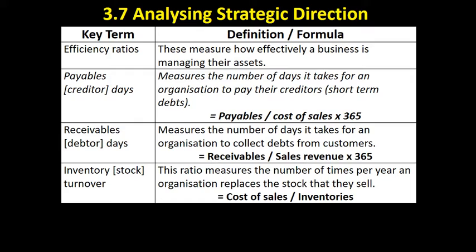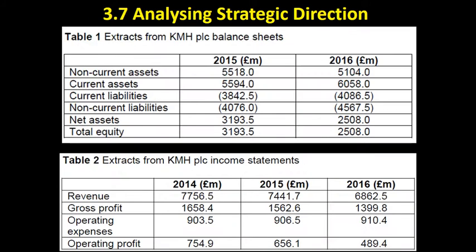When a business buys an item on credit from a supplier, how long does it take to pay them off? It's calculated by payables divided by cost of sales, times 365 for the days in the year. Payables is money owed to suppliers; cost of sales is obviously the variable cost of production. Multiply that by 365 and it gives us an indication of how long it's taking us to pay our debts.